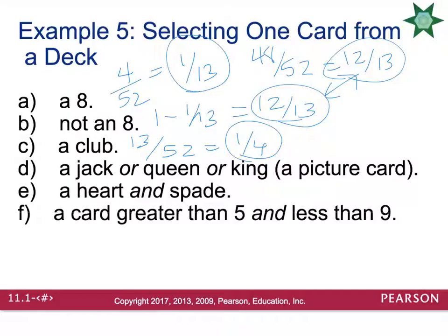What is the probability of drawing a jack or a queen or a king? Well, there's four jacks, there's four queens, and there's four kings. So there's 12 face cards total out of 52 cards in the deck. Reduce your fraction, and that'll give you a probability of 3 out of 13.